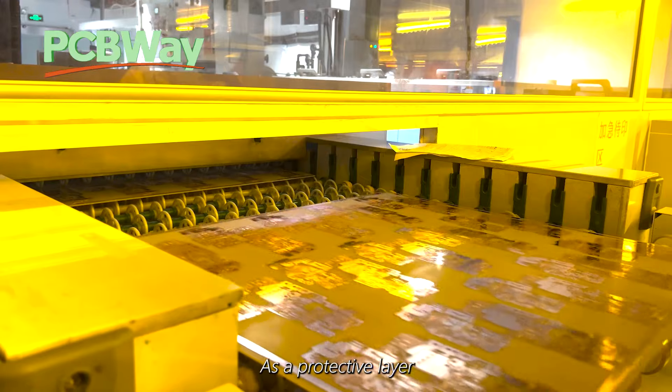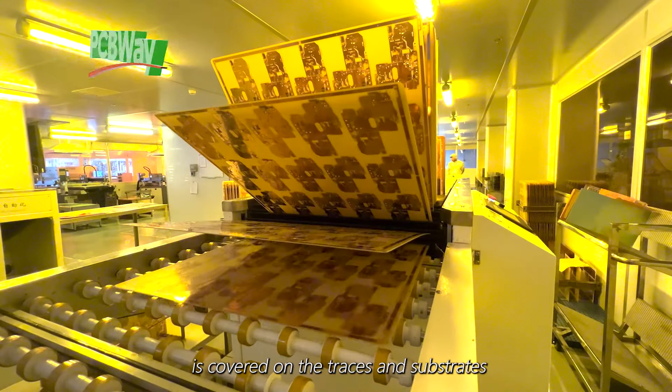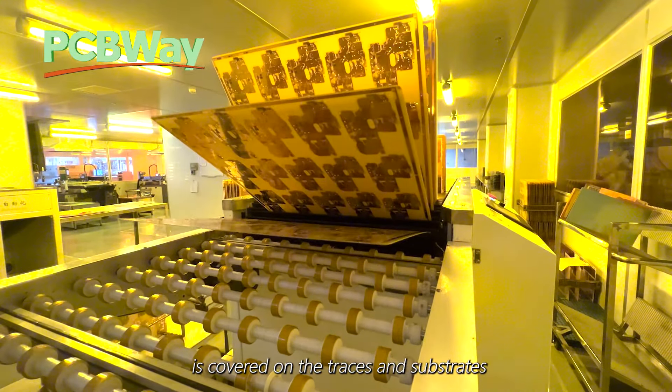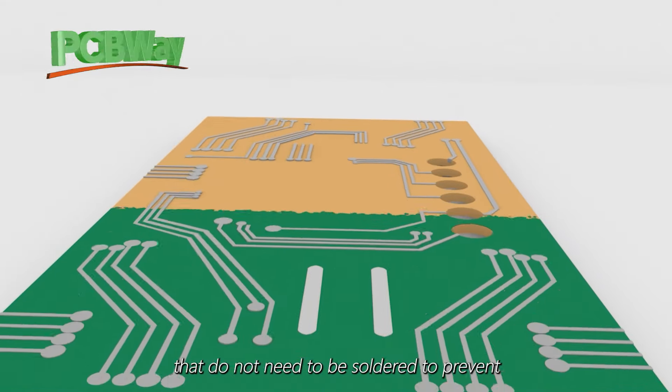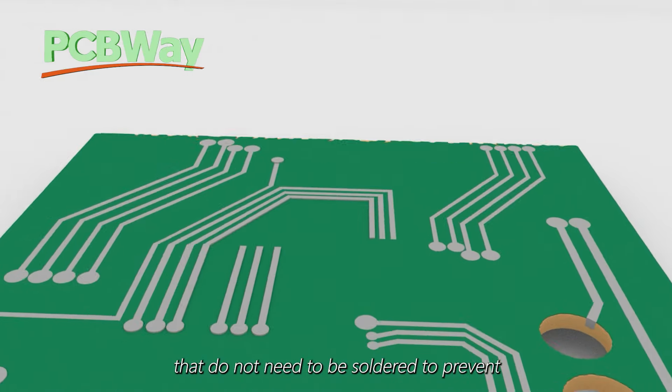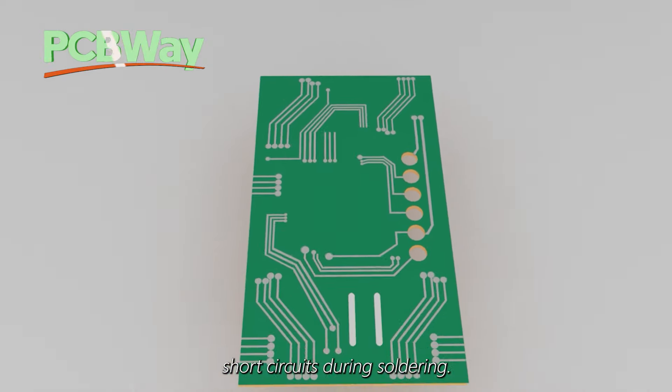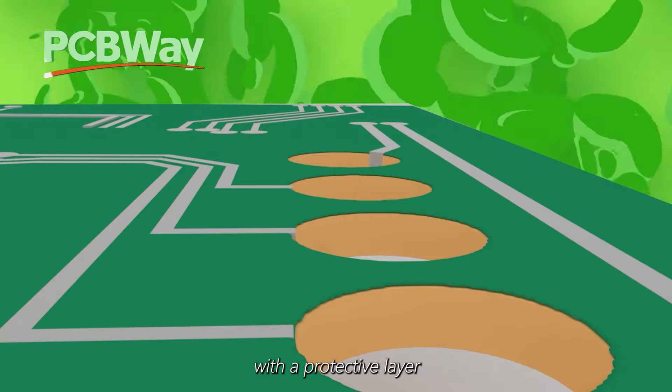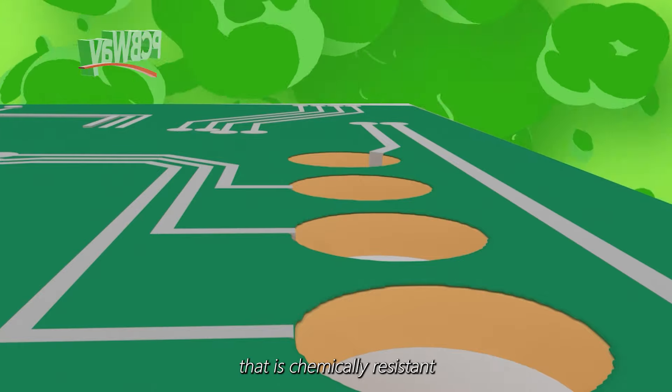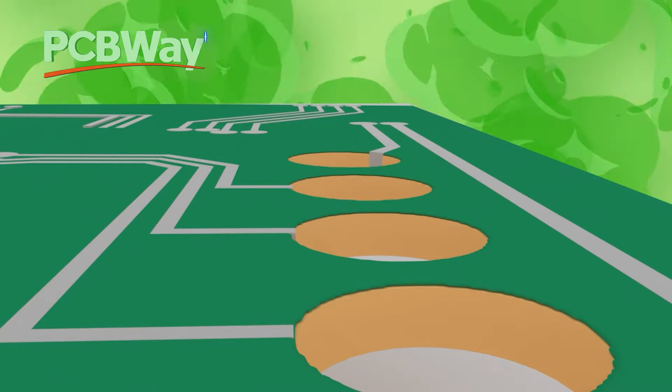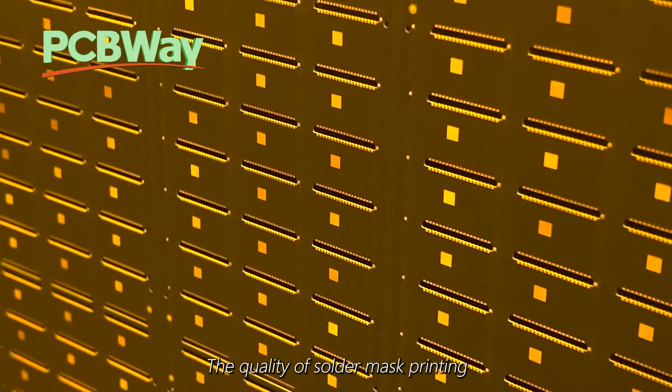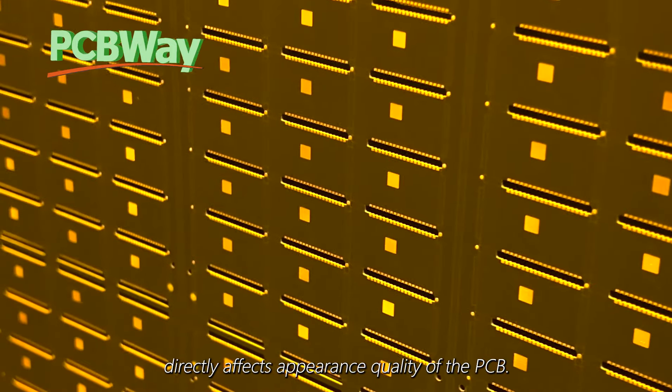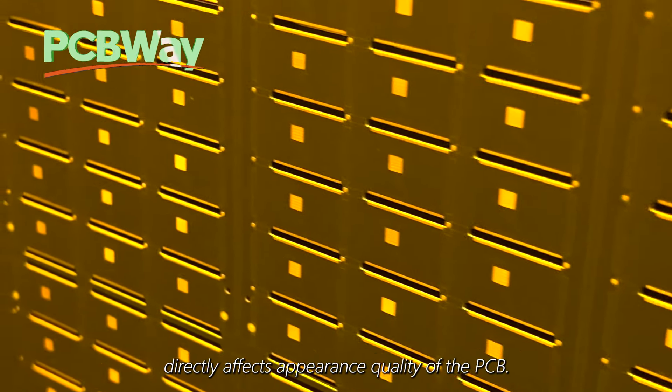As a protective layer, the solder mask layer is covered on the traces and substrates that do not need to be soldered to prevent short circuits during soldering. At the same time, it serves to provide a permanent protective layer that is chemically resistant. The quality of solder mask printing directly affects the appearance quality of the PCB.